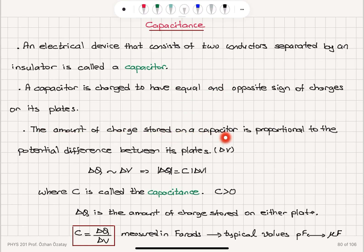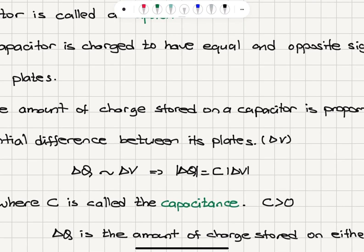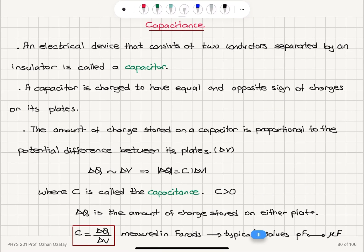The amount of charge stored on a capacitor is proportional to the potential difference between its plates, delta V. When we start charging a capacitor, the charge that develops on the plates is proportional to the voltage applied between the plates, and the proportionality constant is called capacitance. So C is called the capacitance, and capacitance is a positive quantity. The absolute value of delta Q equals C times the absolute value of delta V. Capacitance is always positive and it basically tells us the capacity to store charge under the application of a potential difference.